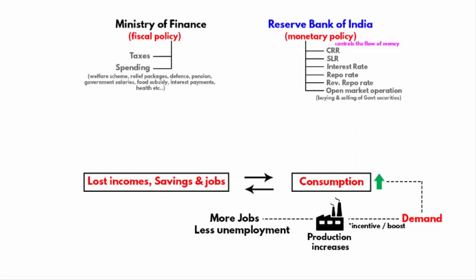Now, you need to look at the society objectively. If you look at the economic division of society, it is divided into four parts: high income group, middle income group, low income group, and economically weaker section.